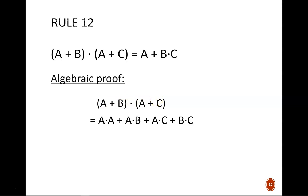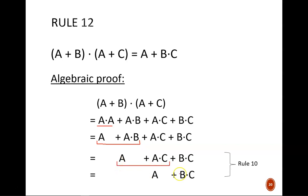Next, we see A AND A, which simplifies to just A. Next, we actually get to apply rule 10 twice in a row. A OR AB becomes just A. Similarly, A OR AC becomes just A.